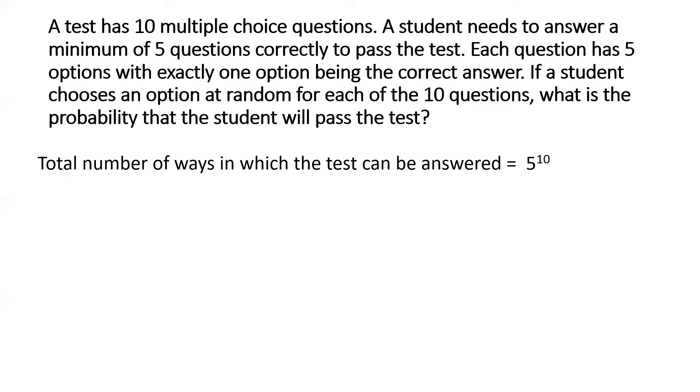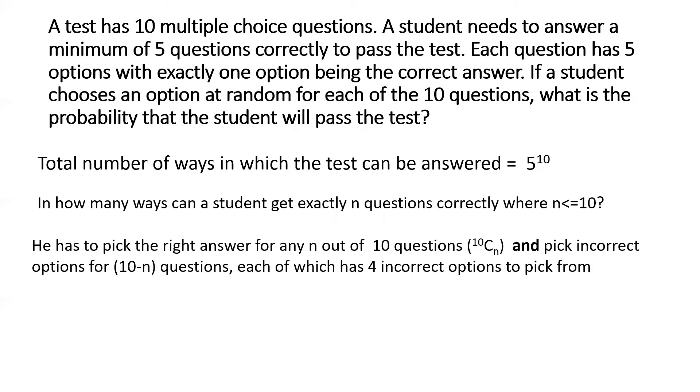Now let's consider in how many ways can a student get exactly n questions correctly, and of course n here is less than or equal to 10. So for that, the student has to pick the right answer for any n out of 10 questions. Now remember there are 10 questions and he has to pick the right answer for any n out of those 10 questions. So that could be done in a total of 10Cn ways, so 10 combination n.